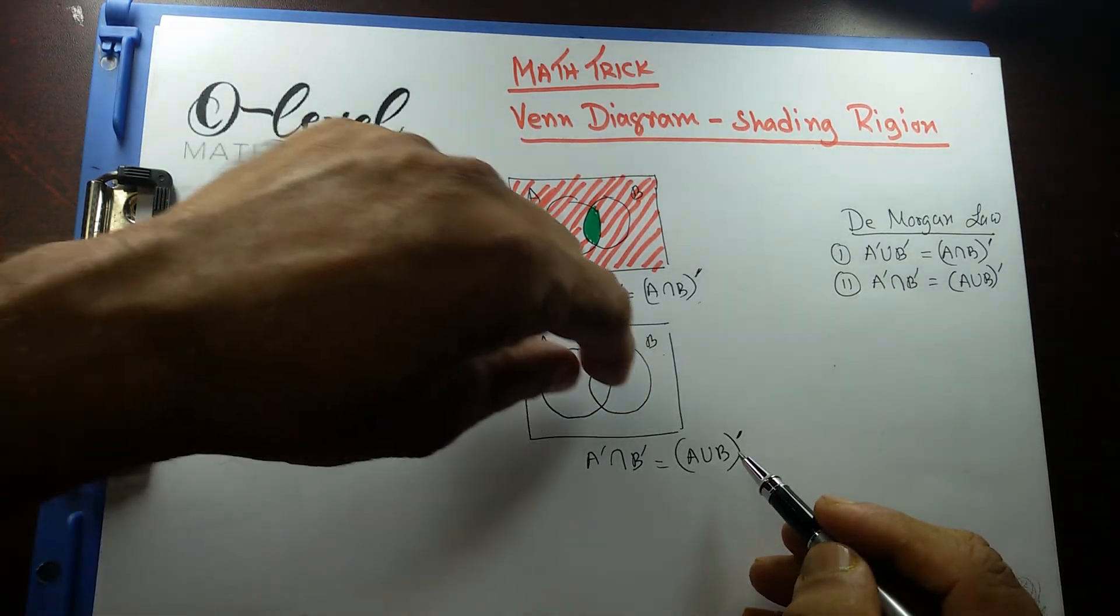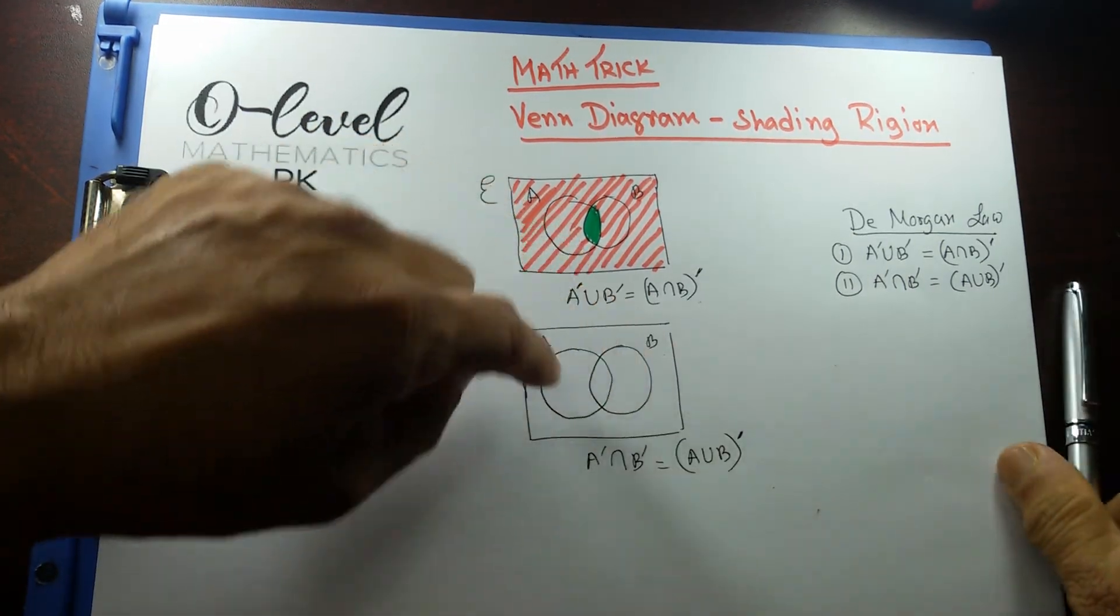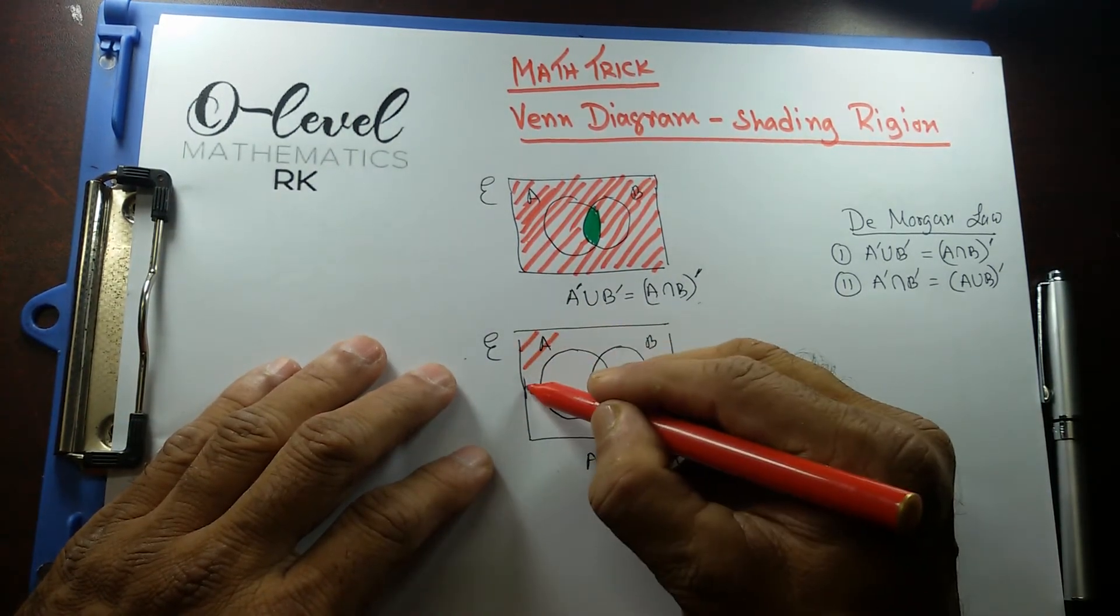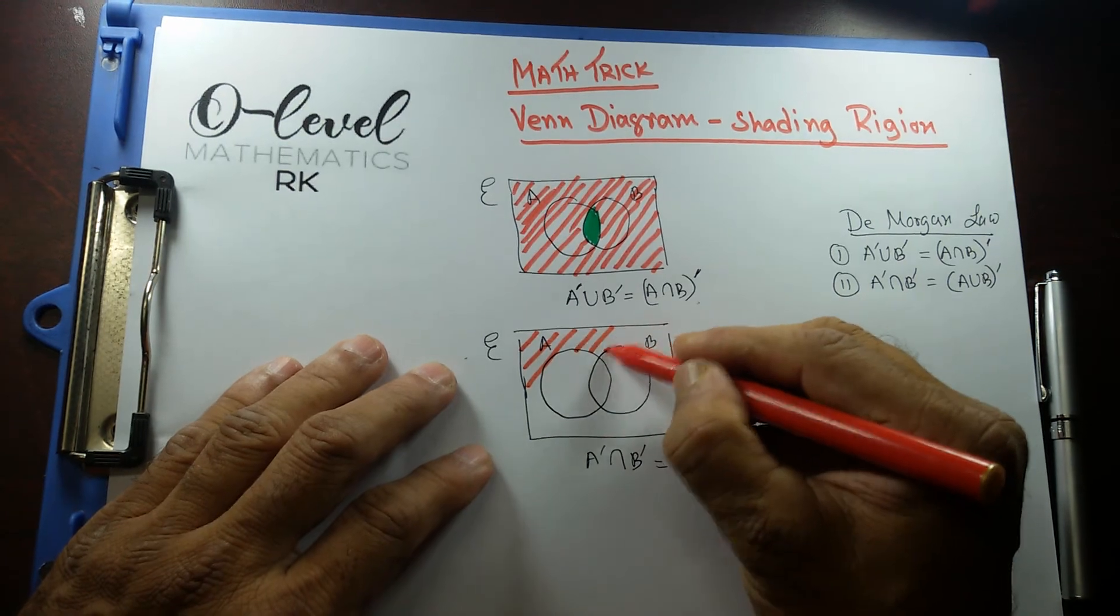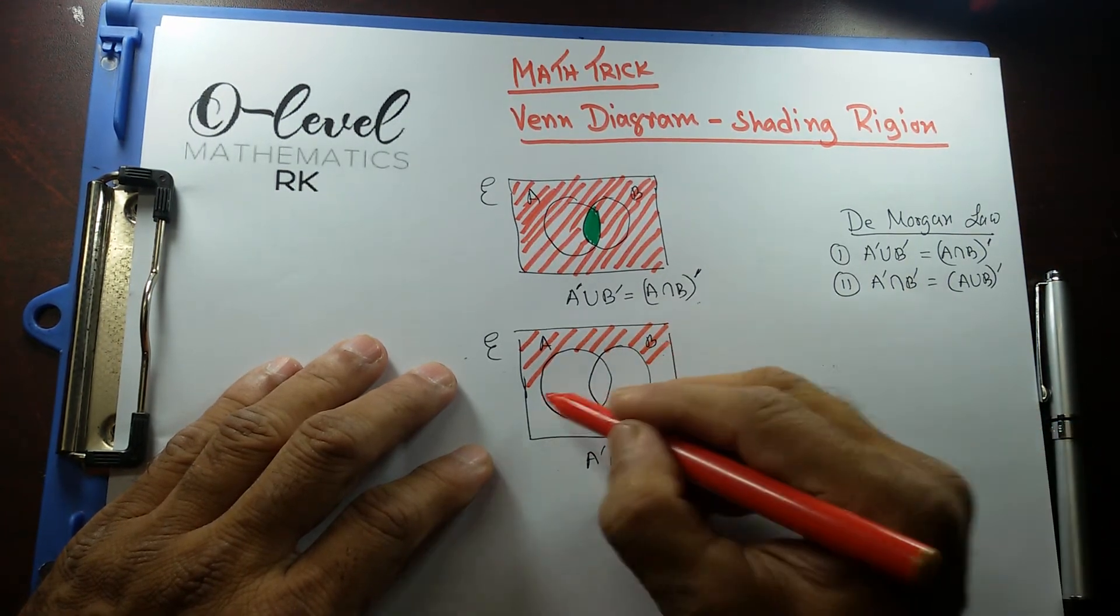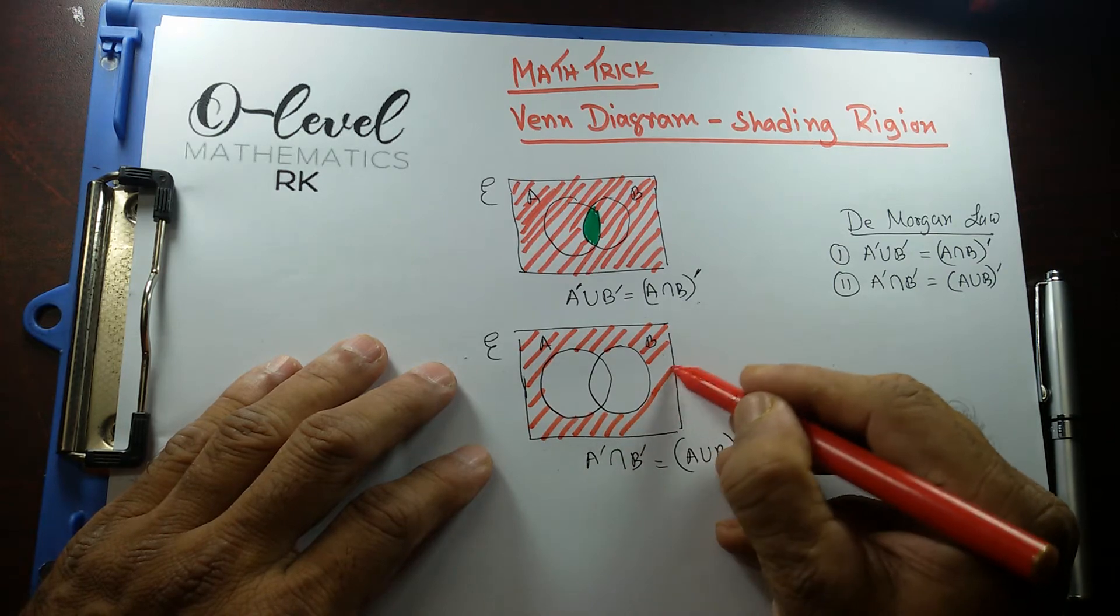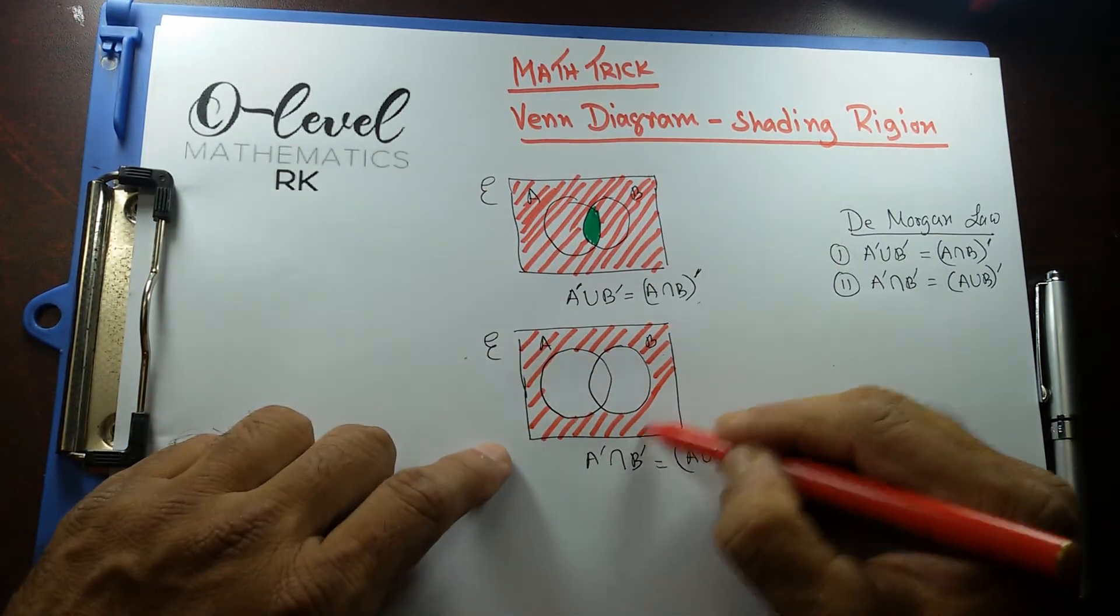So A union B, except these two regions, and overlapping regions, everything else. So I'm just going to shade that in red. So that. This is pretty understandable, so I don't need to shade this one in green.